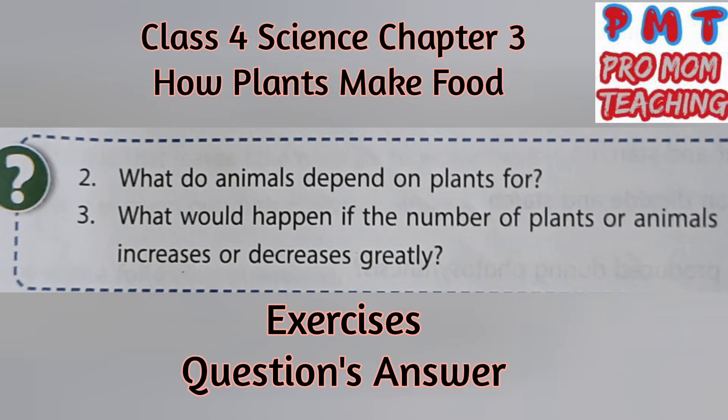Question: What would happen if the number of plants or animals increases or decreases greatly? Answer: If the number of plants or animals increases or decreases greatly, the balance in nature will be disturbed.